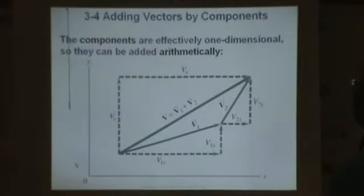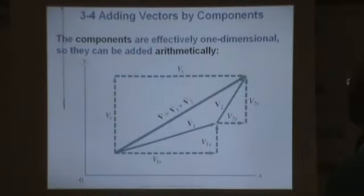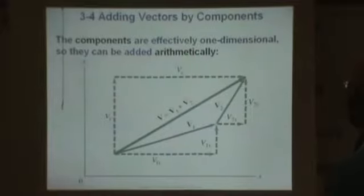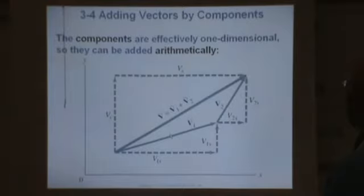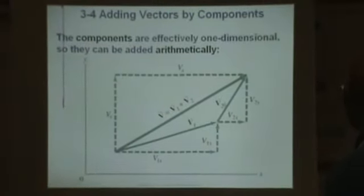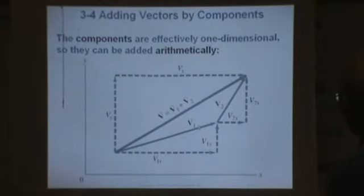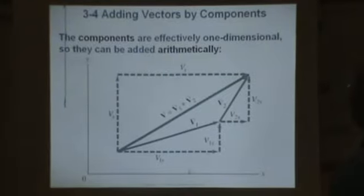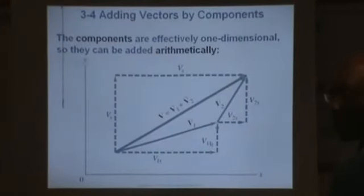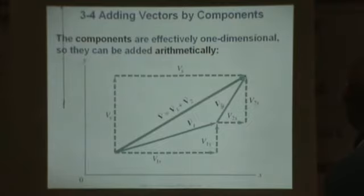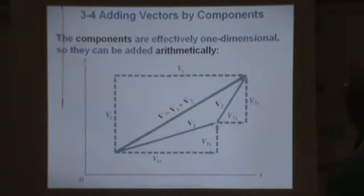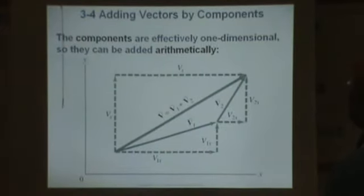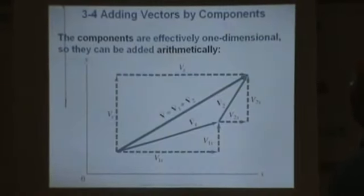The components are effectively one-dimensional. So let's say we want to add these two vectors, v1 and v2. What we need to do is find the components of v1. They're right here, v1x and v1y. Are you following me so far? And here we need to have the components of v2, which is v2x and v2y.